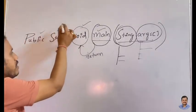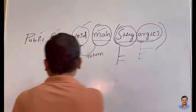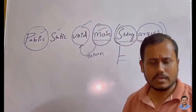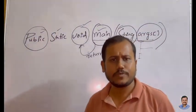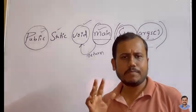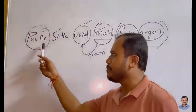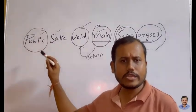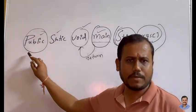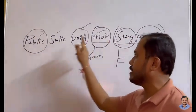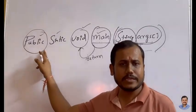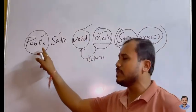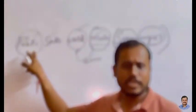Now the question is: what is this public and what is this static? In Java we have access specifiers like private, public, and protected. If you want your method to be accessible throughout the program anywhere, we need to write public before the method. Making your main method public means it can be accessed throughout the program, making it available to the rest of the classes.